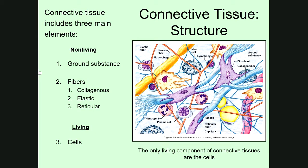Elastic fibers are made out of a different protein than collagenous fibers — the protein they're made out of is known as elastin. The last type of fiber is known as a reticular fiber. You can see this thin blue line scattered in the background. Reticular fibers are also made out of collagen, but it's a different form of collagen than the collagenous fibers. Reticular fibers provide a scaffolding for tissues, helping to give them support.